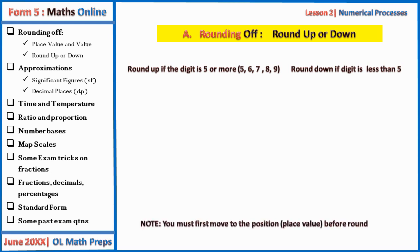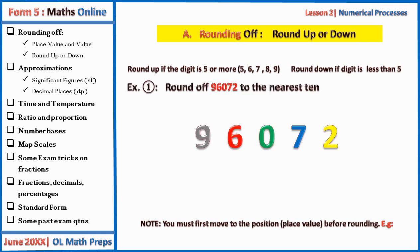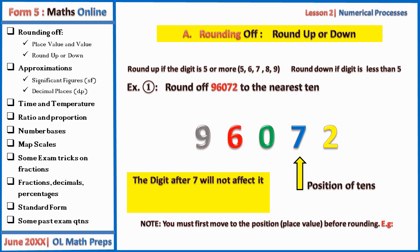An important remark: you must first move to the position of that place value before you round up or down. For example, round off 96072 to the nearest ten. First, identify the position of tens, which is occupied by seven. Ask yourself: will the two after it affect it? The answer is no, because when it is less than five we round down. So the seven remains the same, and we replace the digit after seven by zero.